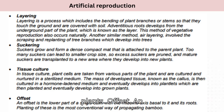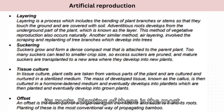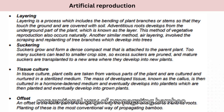Offset: an offset is the lower part of a single corm, not the rhizome, excess and basal to it and its roots. Planting of these is the most conventional way of propagating bamboo.